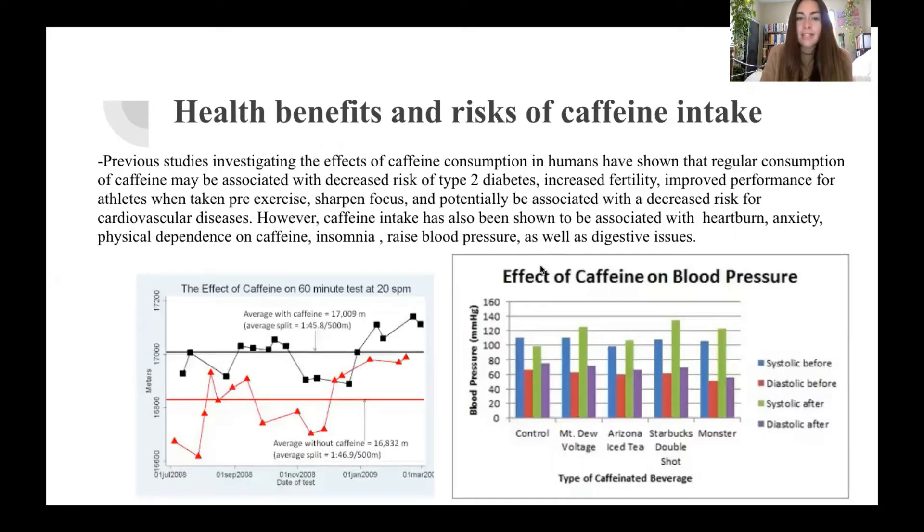So health benefits and risks of caffeine intake. Previous studies investigating the effects of caffeine consumption in humans have shown that regular consumption of caffeine may be associated with decreased risk of type 2 diabetes, increased fertility, improved performance for athletes when taking pre-exercise. And we can see this on the bottom left hand figure with a rowing test that was looking to see does caffeine boost performance. The data on the black dots would indicate with caffeine and the red triangles are without. And so clearly we can see that with caffeine, they rowed farther than those without, indicating that caffeine boosts performance for athletes. It can also sharpen focus and potentially be associated with a decreased risk for cardiovascular diseases.